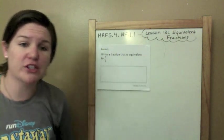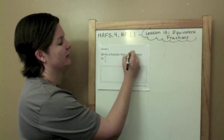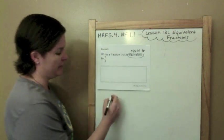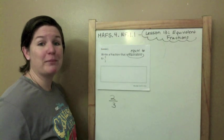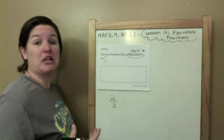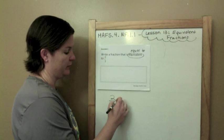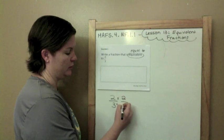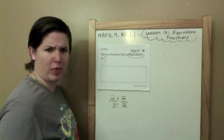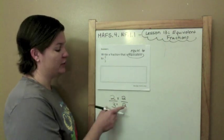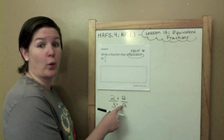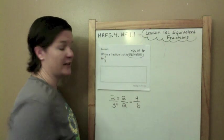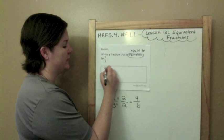Okay, write a fraction that is equivalent to 2 thirds. Equivalent is a fancy word for equal to. Okay, that equals 2 thirds. The way that we do that, 2 thirds, you multiply by a fraction that is equivalent or equal to 1. So if I multiply this by 2 over 2, 2 in the numerator, 2 in the denominator, 2 over 2 equals 1.